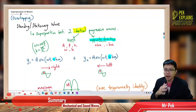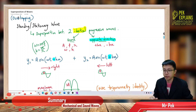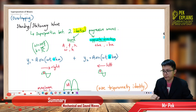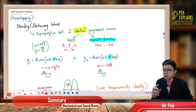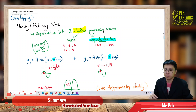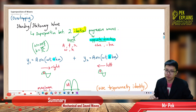Superposition, in other words, is called overlapping. When there is a superposition of waves, there's one condition: when superpositions between two identical progressive waves, it will form a stationary wave.